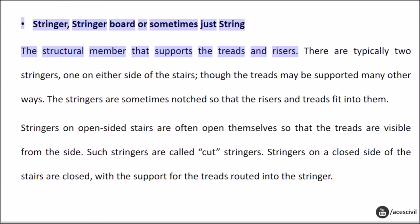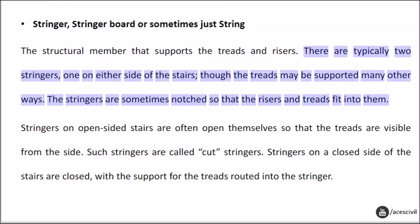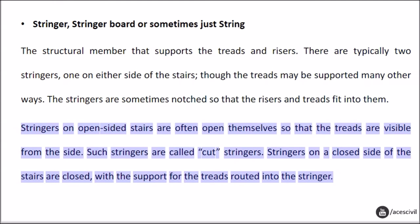Stringer, stringer board, or sometimes just string: the structural member that supports the treads and risers. There are typically two stringers, one on either side of the stairs, though the treads may be supported many other ways. The stringers are sometimes notched so that the risers and treads fit into them. Stringers on open-sided stairs are often open themselves so that the treads are visible from the side — such stringers are called cut stringers. Stringers on a closed side of the stairs are closed, with the support for the treads routed into the stringer.